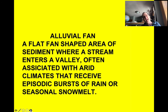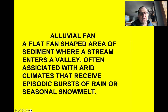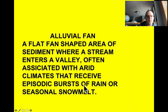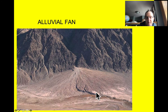You have what's called an alluvial fan — a depositional form seen in mountains. It's a flat, fan-shaped area of sediment where a stream enters a valley only occasionally, often associated with arid climates that receive episodic bursts of rain or seasonal snow melt. When water does come through, it moves fast enough to carry a huge amount of sediment and deposit it at the mouth coming out of a canyon in the mountains.